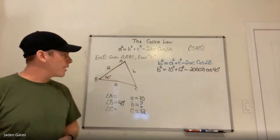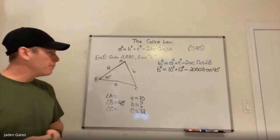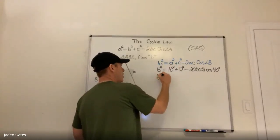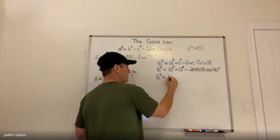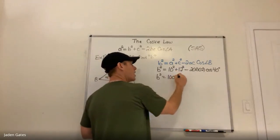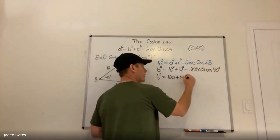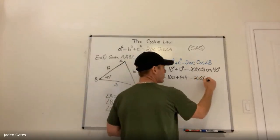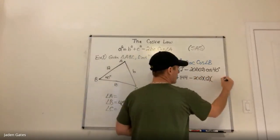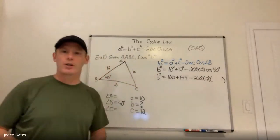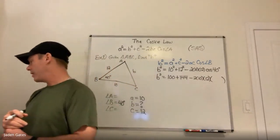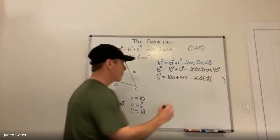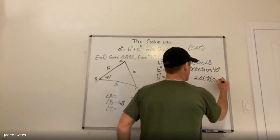I've substituted in all my information, so now I can simplify things following BEDMAS. I do my exponents first: 10 squared is 100, 12 squared is 144. I can also evaluate cos 40 degrees because I'm not doing anything there other than typing it into my calculator, and I get 0.77.